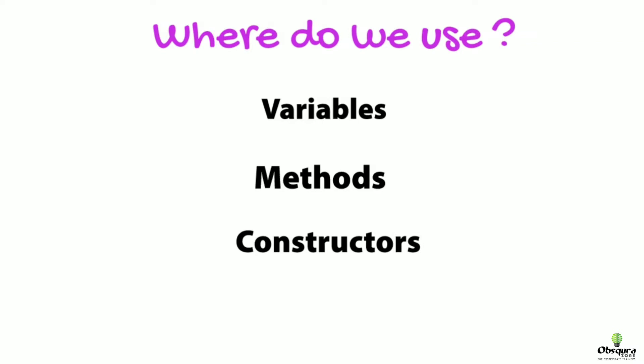This and super keywords are mainly used at three levels in Java. There are variable level, method level, and constructor level. This is used to refer to current class variable, method, and constructor. Similarly, super is used to refer to immediate parent class variable, method, and constructor.